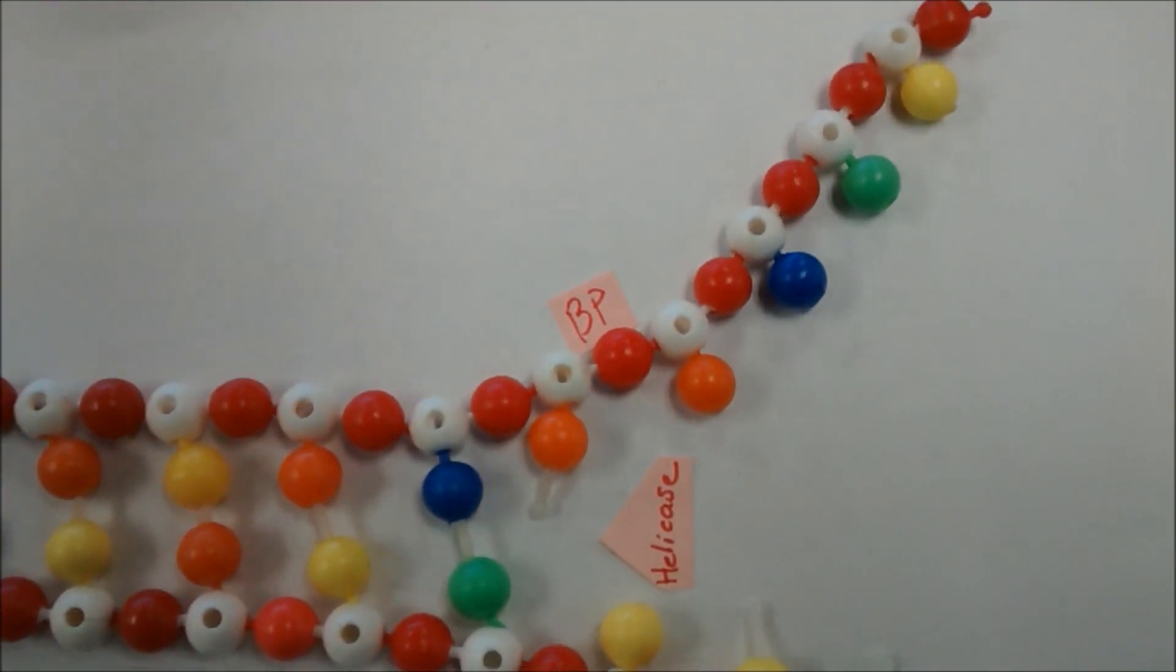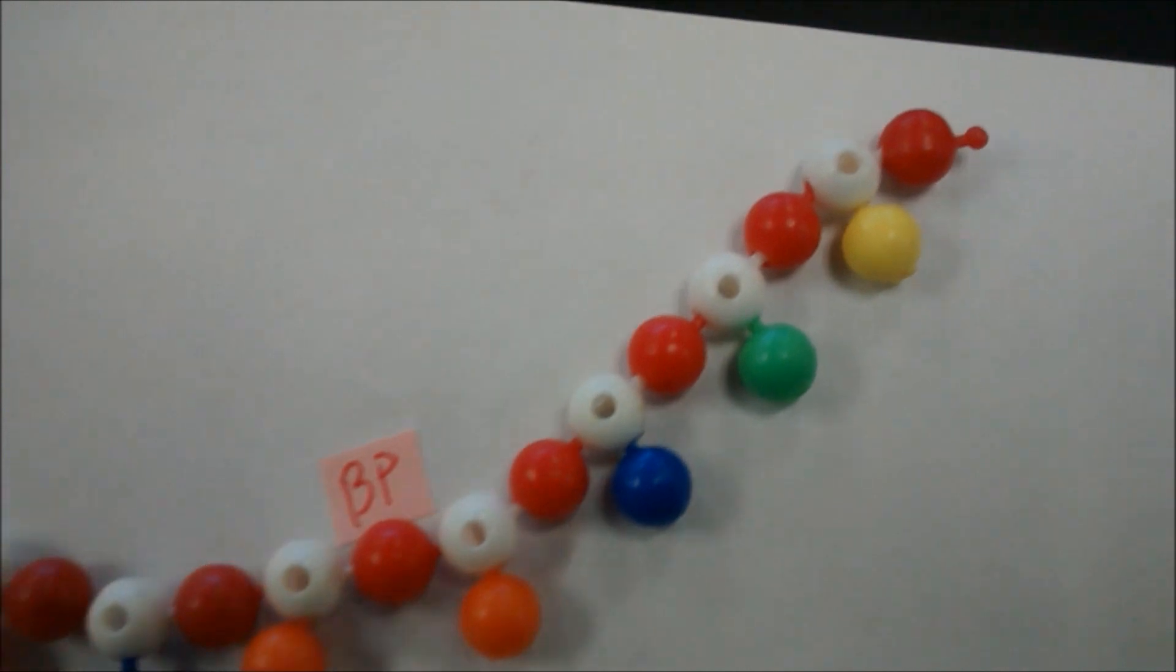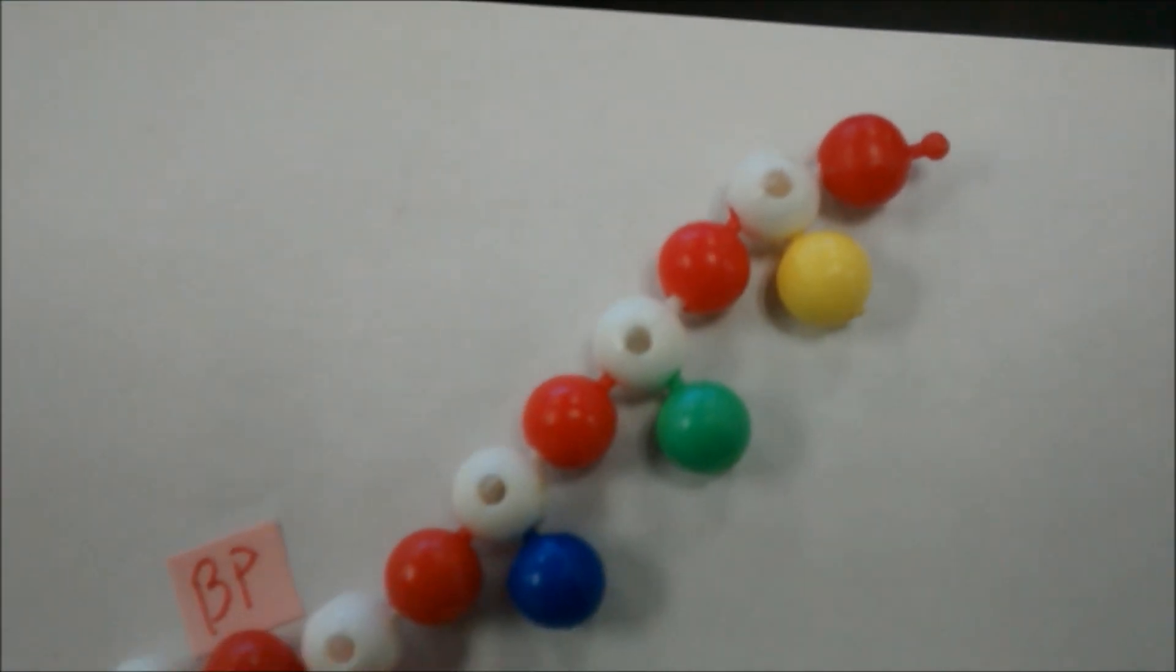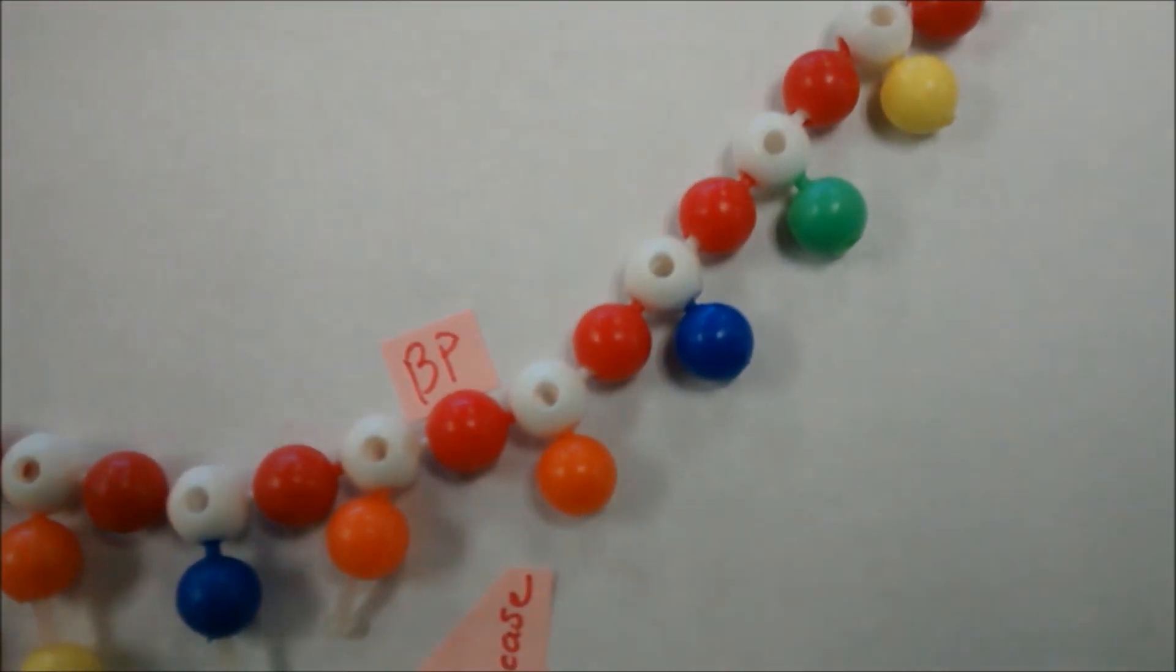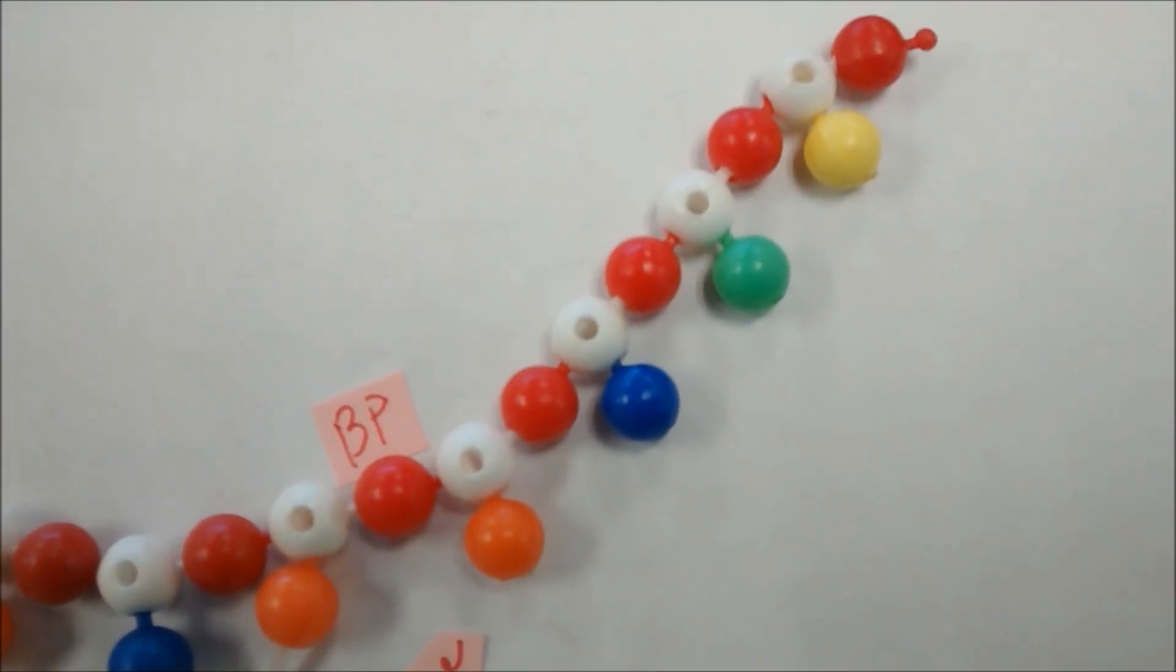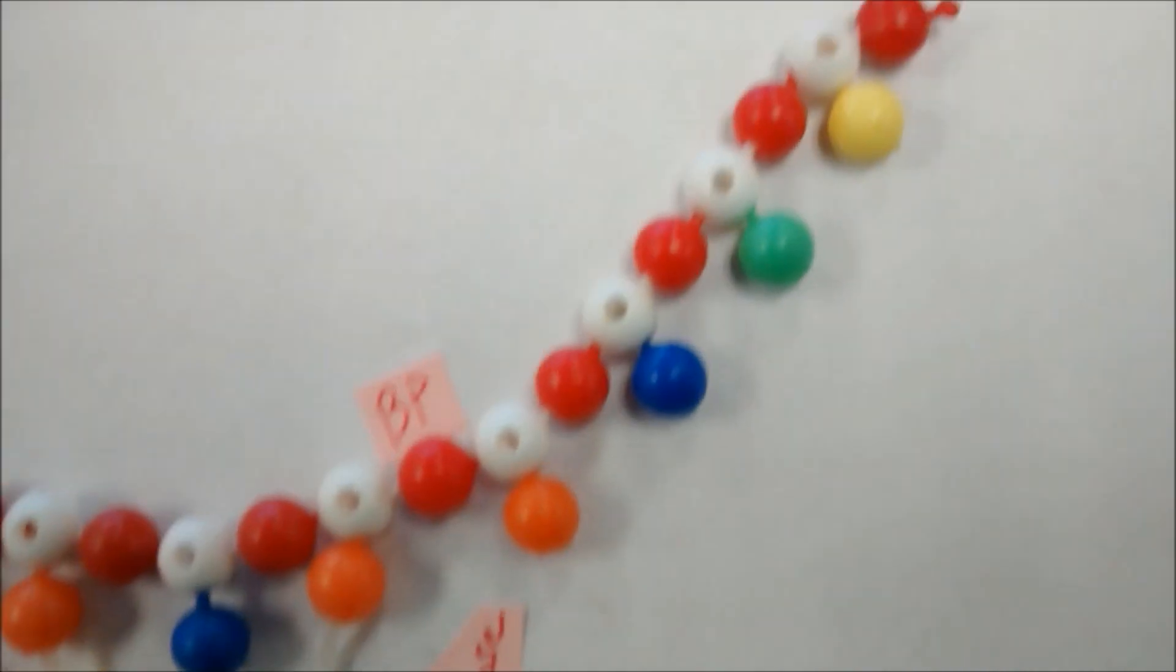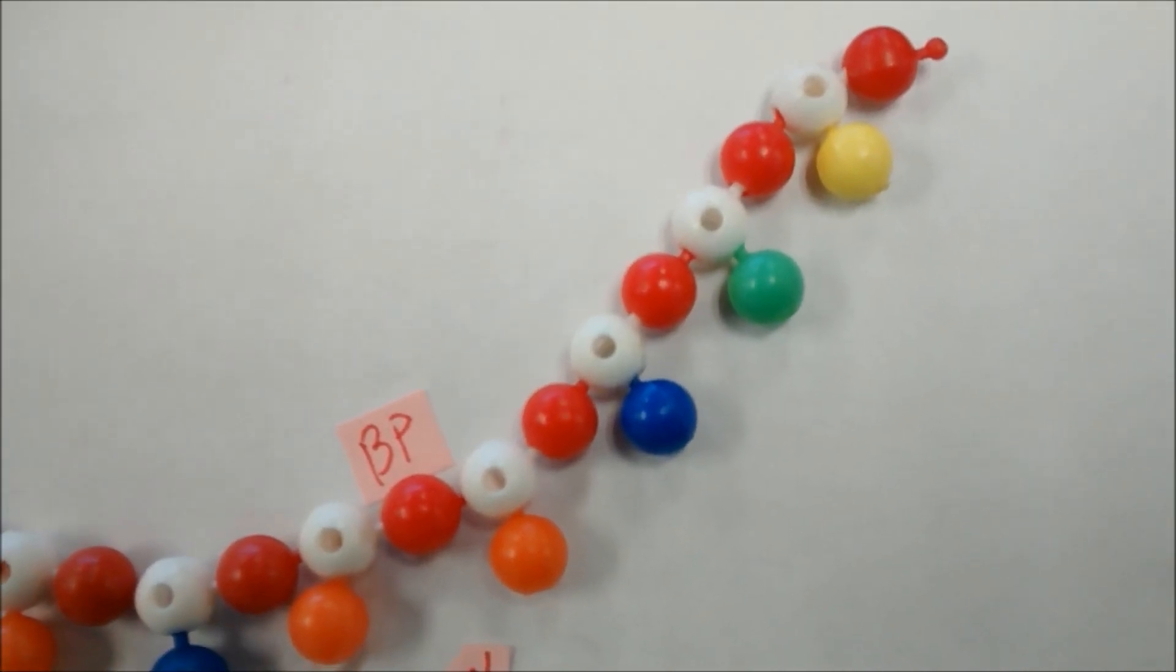So now we're going to move to this strand. And this strand is our, notice the three prime, it's our three prime to five prime side. And on this side, DNA polymerase is going to come and attach. It knows to attach there because it's going to find an RNA sequence that was laid down by primase.